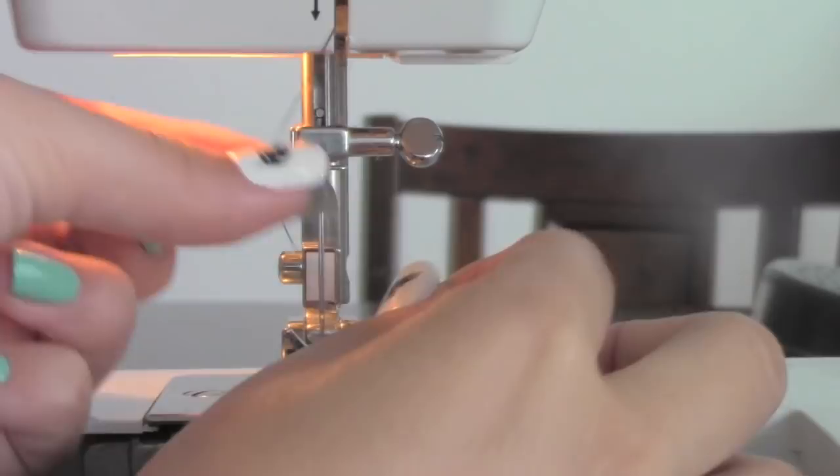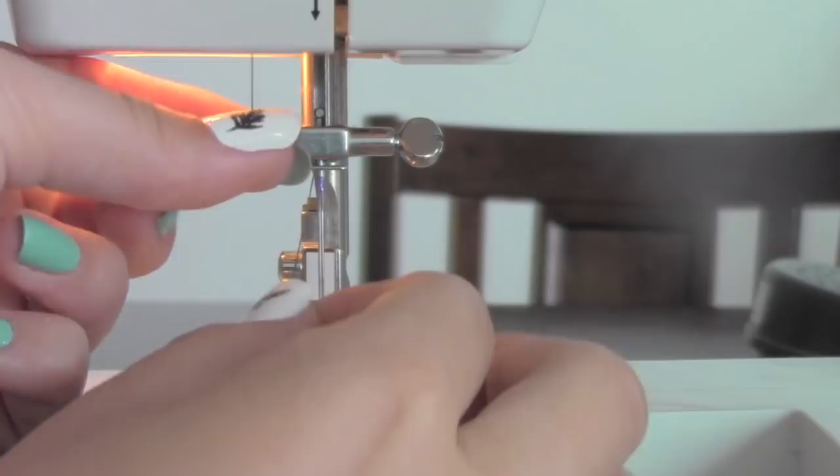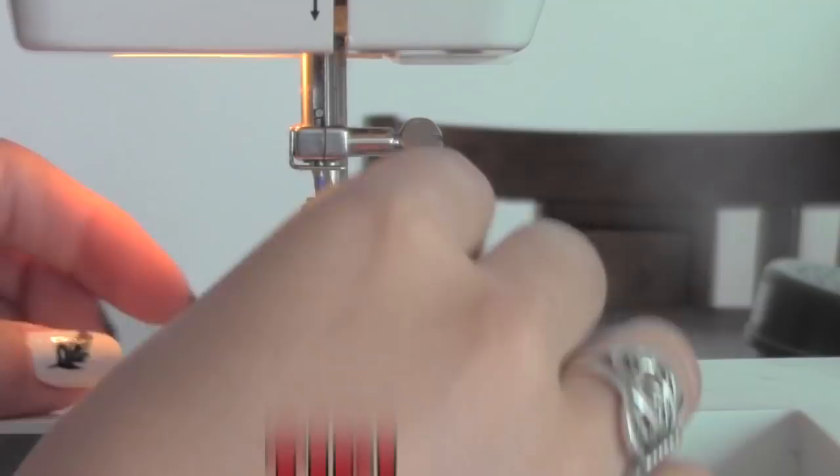Make sure the needle is up using the hand winder so the upper thread guide can come up like this. Place the thread right under like so. See how the thread is inside? Place the thread on this little slit to hold the thread in place.